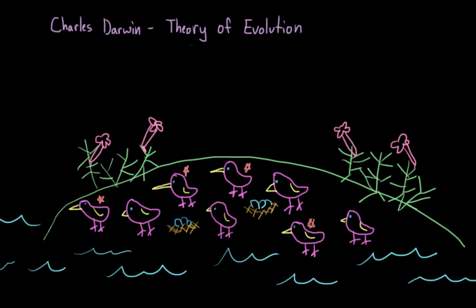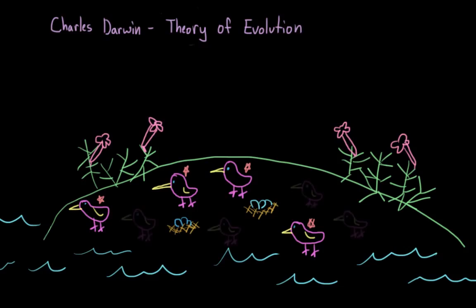So over time, if these same environmental conditions continue, the population will eventually trend towards long, thin beaked birds. What Darwin realized was that if the environment could select for small individual traits, then slowly, over hundreds and thousands of generations, nature could shape an entire species.